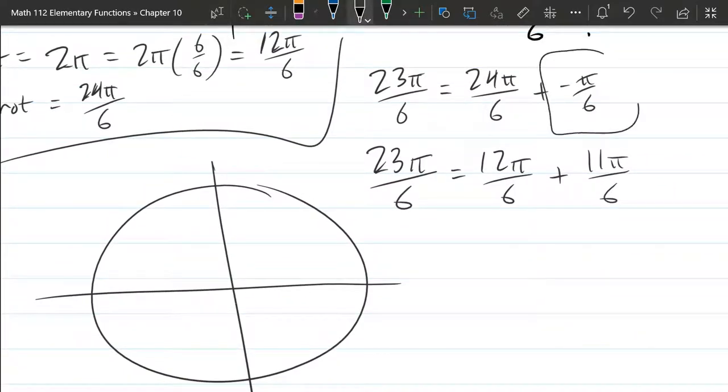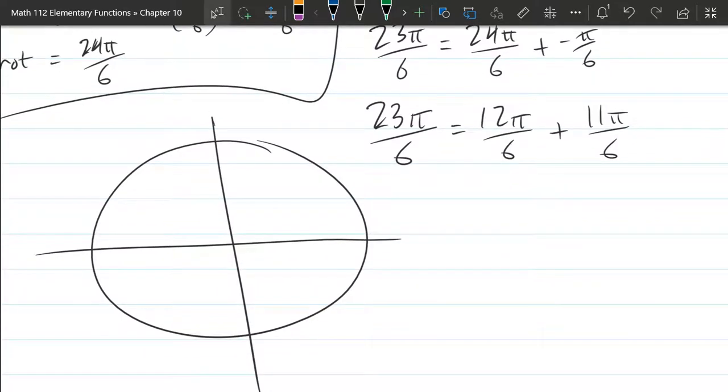I happen to think of this one up here first because 23π over 6 is very close to 24π over 6. That's the first rotation my brain went to. So I'm going to go with that negative π over 6 right there. So you should have graphed enough of these that negative π over 6 is no big deal to graph.